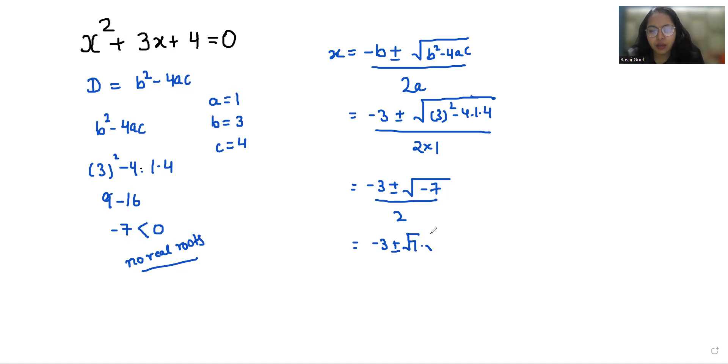And we know that the square root of -1 equals i, which is iota. So we have -3 ± √7·i / 2. So the value of x is: